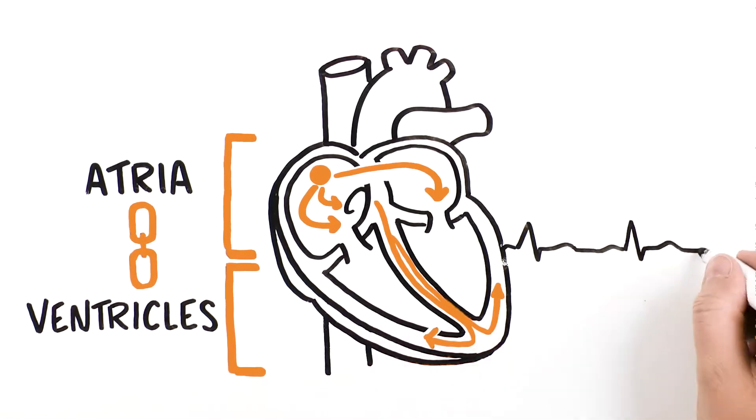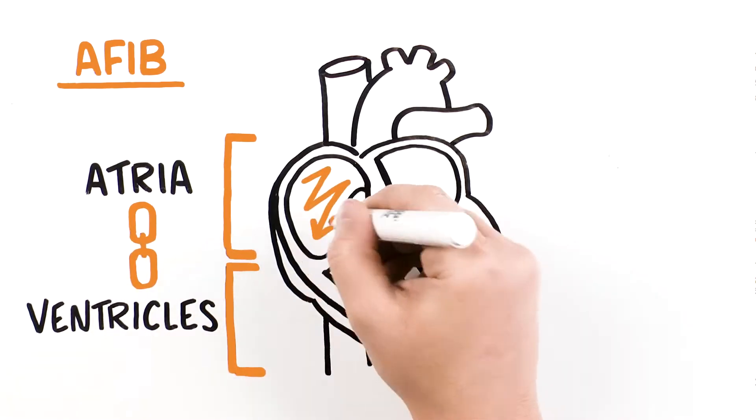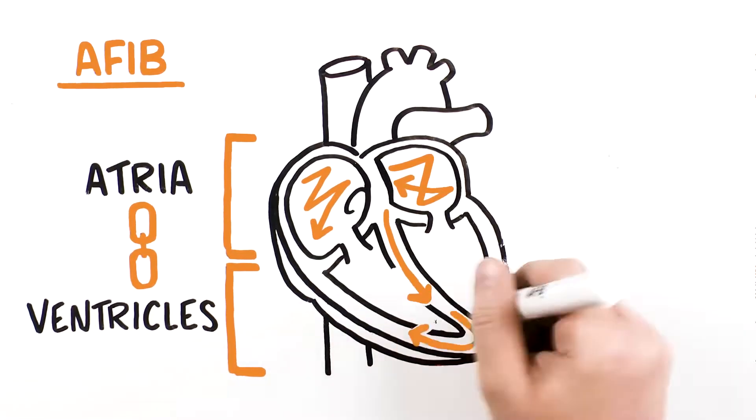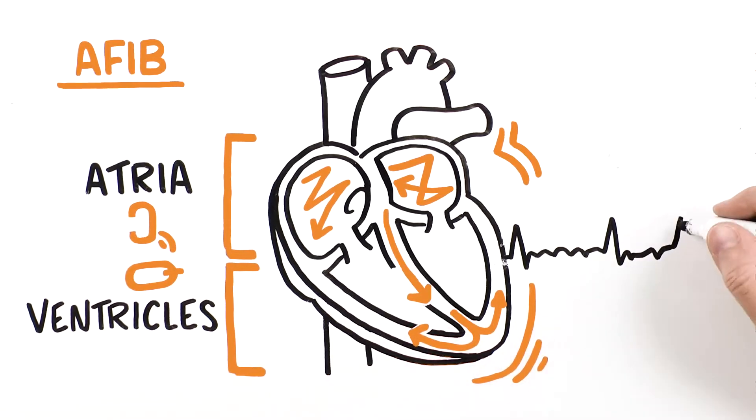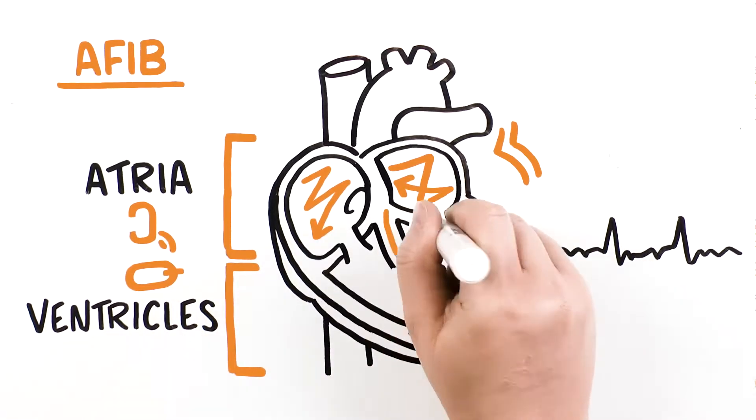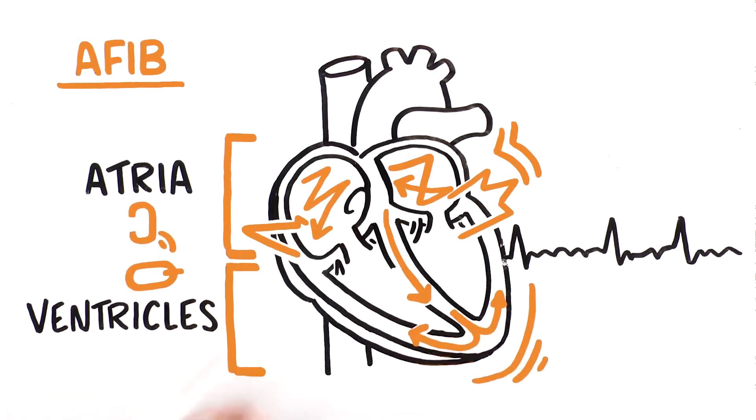In AFib, the top chambers beat chaotically and irregularly, out of sync with the bottom. This causes your heart to beat quickly and lose good, effective contraction from those top chambers of the heart, resulting in quivering or fibrillation of the atria.